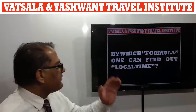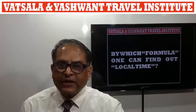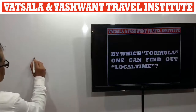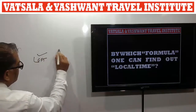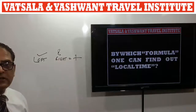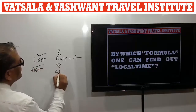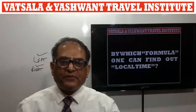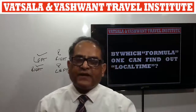By which formula can one find out local time? When left-hand side time is given and you want to find out the right-hand side time, always plus it. When right-hand side time is given and you have to find out the left-hand side time, always minus it. We have to understand what is left and what is right — this will be explained when solving questions.